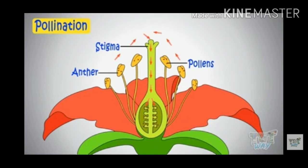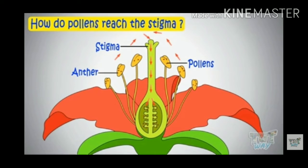After the discussion of fertilization, now I come to the topic of pollination. How do pollens reach the stigma? Pollens reach the stigma by the process of pollination. In this process of pollination, pollen grains come from the anther to the stigma. This transference is known as the term pollination.